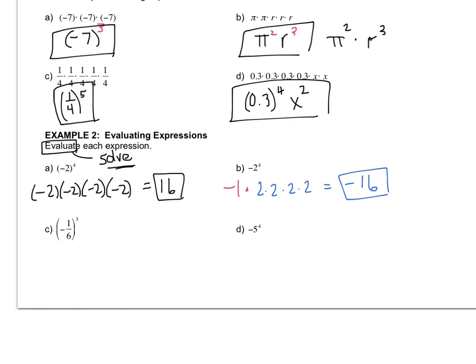Let's write out letter C, negative 1 6th times negative 1 6th times negative 1 6th. So here we go. Negative 1 times negative 1 times negative 1 is negative 1. 6 times 6 times 6 is 216.